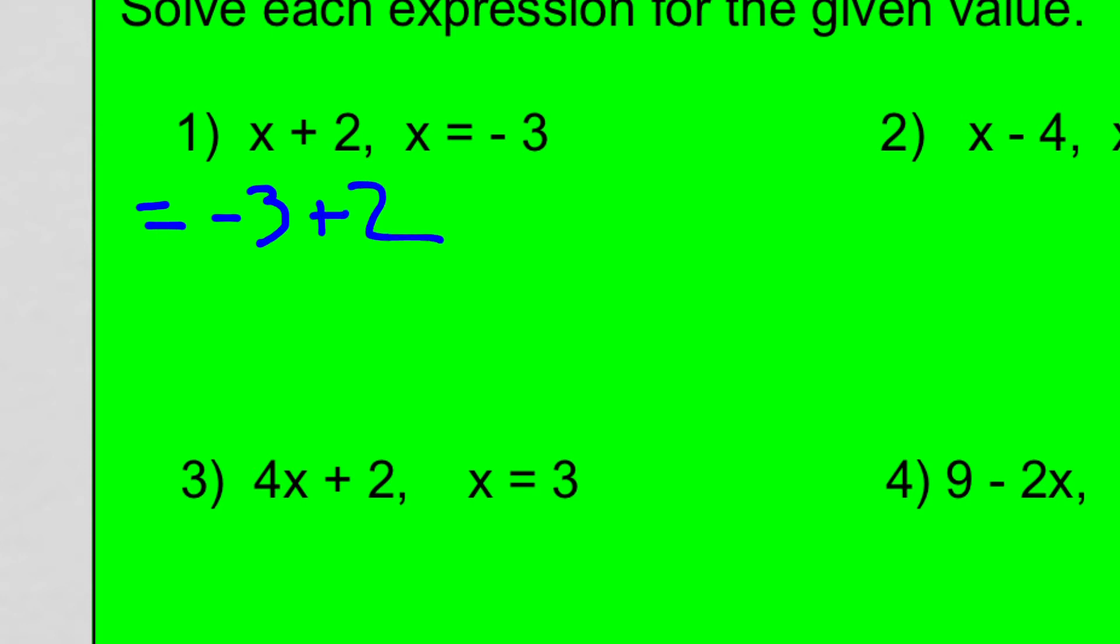We have to think back to our integers. The signs are different. It's a negative and a positive, so we subtract them. And we have more negatives, so the answer is negative 1. So when x is negative 3, this expression works out to negative 1. So it's really just working with integers, but in an algebraic way.